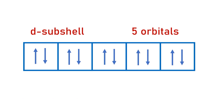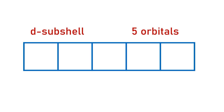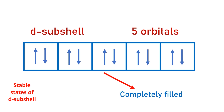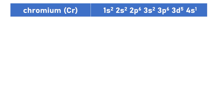The D subshell has five orbitals, each filled with two electrons, giving a total of 10 electrons for a completely filled D subshell. The most stable state of the D subshell is to be half-filled with a total of five electrons — one electron in each D orbital — or completely filled with 10 electrons, with two electrons paired in each D orbital.